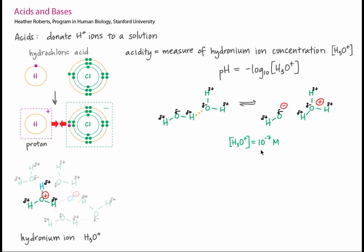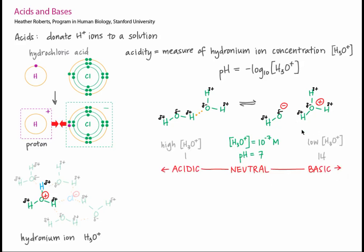Because these numbers are hard to use, we use the pH scale as a measure of acidity instead. pH stands for power of hydrogen, and it's equal to the negative log of hydronium ion concentration. This is often written simply as the negative log of the H-plus concentration. If we plugged in the hydronium ion concentration in pure water, we would find that the pH of pure water is 7. As the hydronium ion concentration increases, the pH decreases, and the solution becomes more acidic.